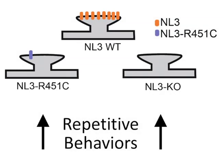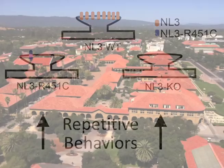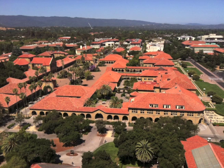Since both Neuroligin-3 mutations decreased brain protein levels, we wanted to identify the specific location where loss of Neuroligin-3 causes repetitive behavior. But the size of the brain made this a tough task — like looking over all of Stanford's campus and trying to pick out the building where we conducted this research. We focused our analysis on the striatum, a brain region that plays a key role in linking action sequences into stereotyped patterns.